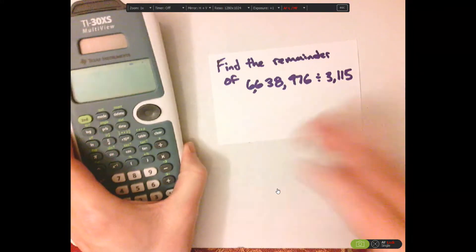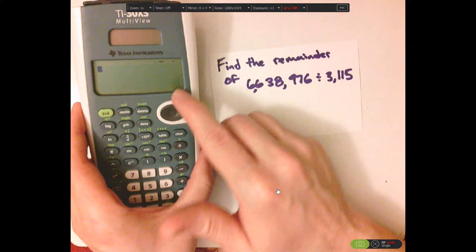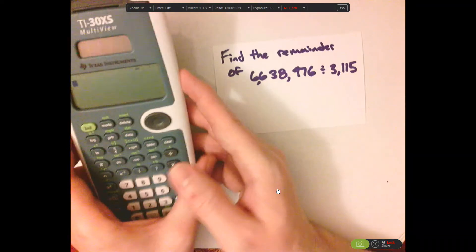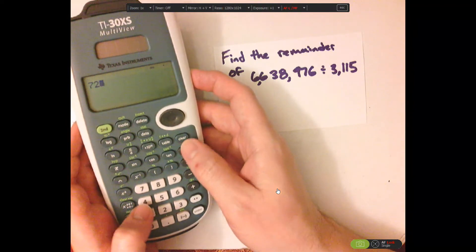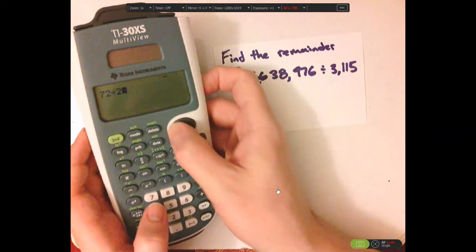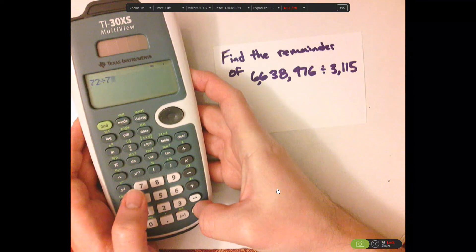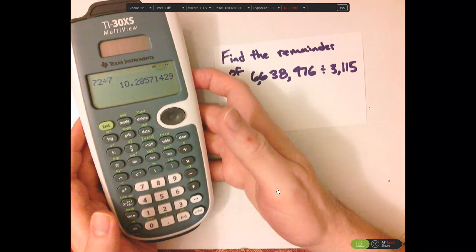Now, I'm going to type in a smaller one in here and show you how to do it that way. Okay, so if I do 72 divided by, let's say, divided by 7, I get that.